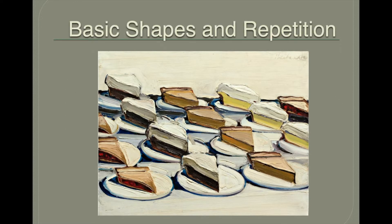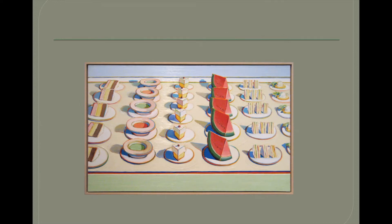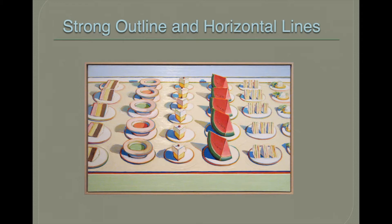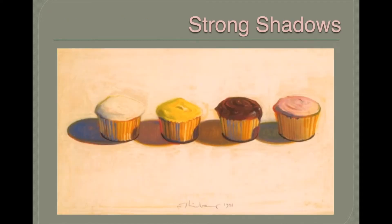In Wayne Thiebaud's artwork we see basic shapes and repetition — that means when you see an object more than once. Look at the rows of cake that are repeating, the sandia or watermelon, and other desserts. They have strong outlines and horizontal lines. Remember, horizontal lines are lines that go across the page. He also has strong shadows.